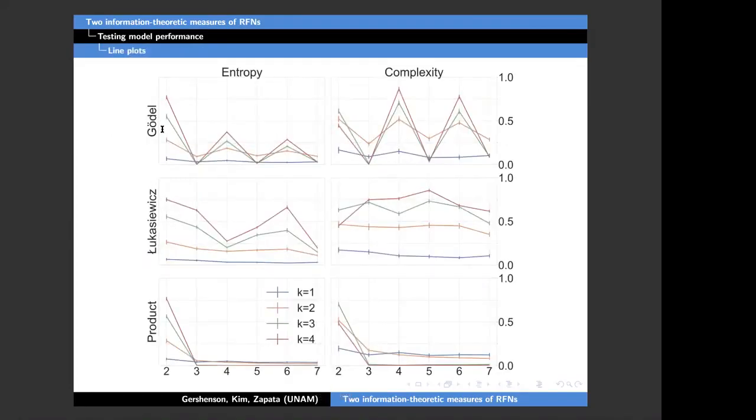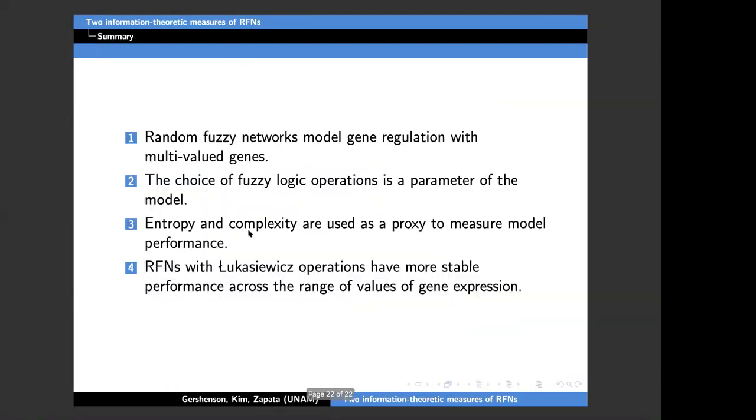We did some simulations for networks with 15 genes. In the X axis, we vary the number of different values of gene expression. Boolean networks would correspond to X equal to two here. We also vary the number of regulators each gene can have from one up to four. And we vary also the choice of fuzzy logic operations. Here we can see that entropy is highest for Boolean networks in all the cases. Gödel operations have ups and downs at even and odd values of gene expression, and Lukasiewicz has the more stable behavior here. That's why we will try to consider it in a further study.